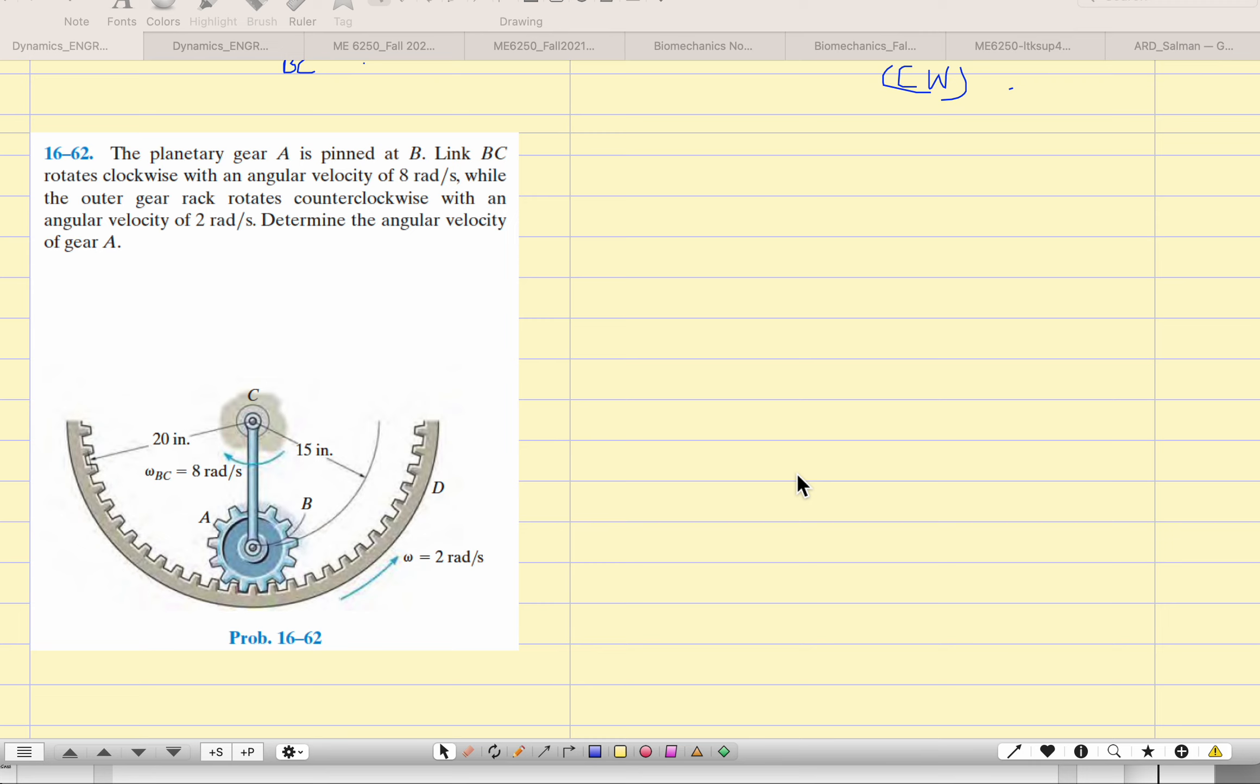Planetary gear A. The planetary gear A is pinned at point B. So this is pinned at point B. And the link BC rotates clockwise. Okay, this is clockwise rotation of the link BC with 8 radians per second. So if it is clockwise, it means outside the paper is the direction.